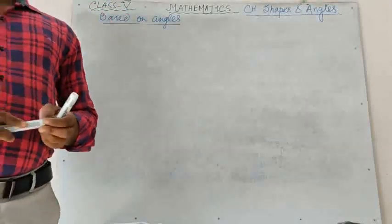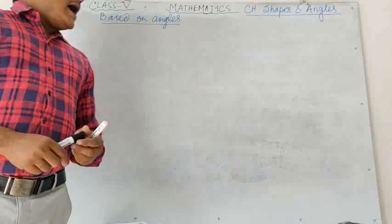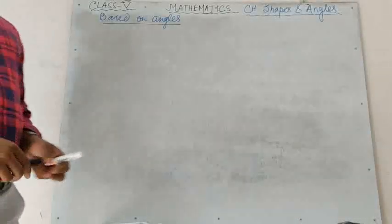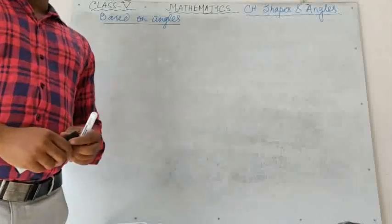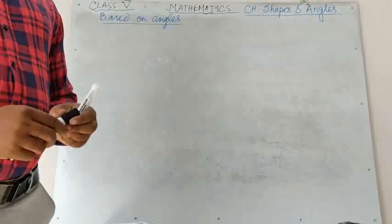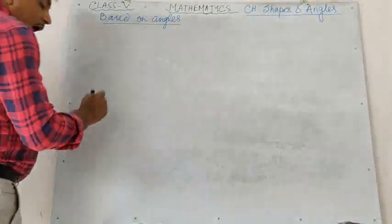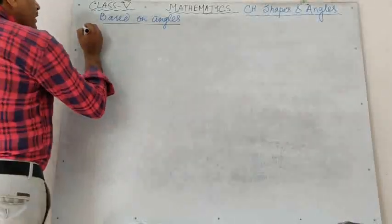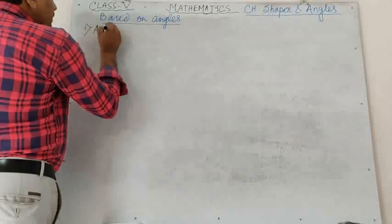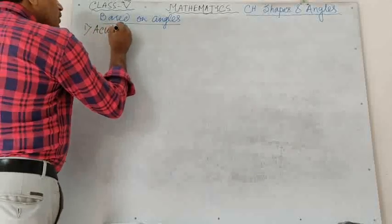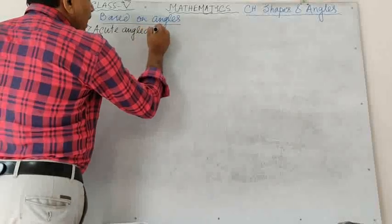Now, based on angles, there are three types of triangle. Number one: Acute angled triangle.